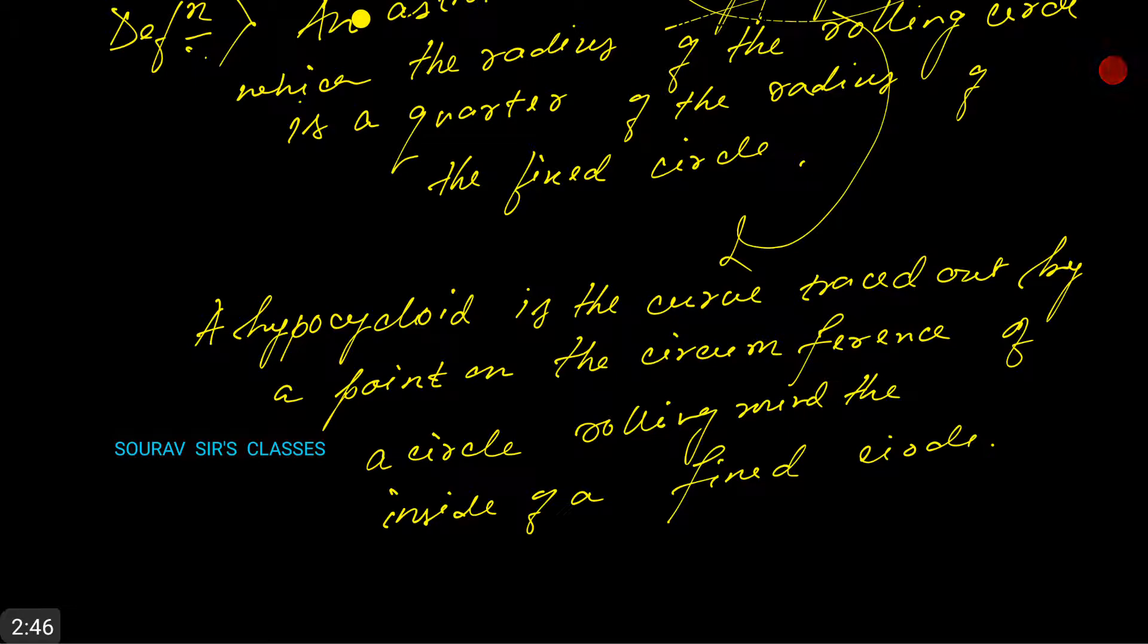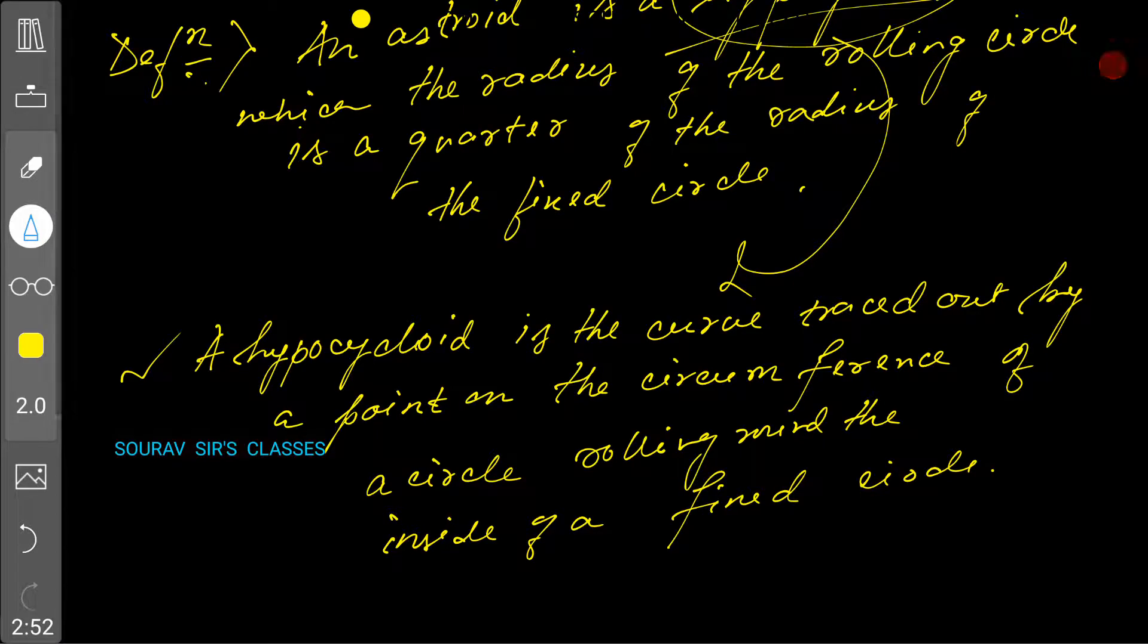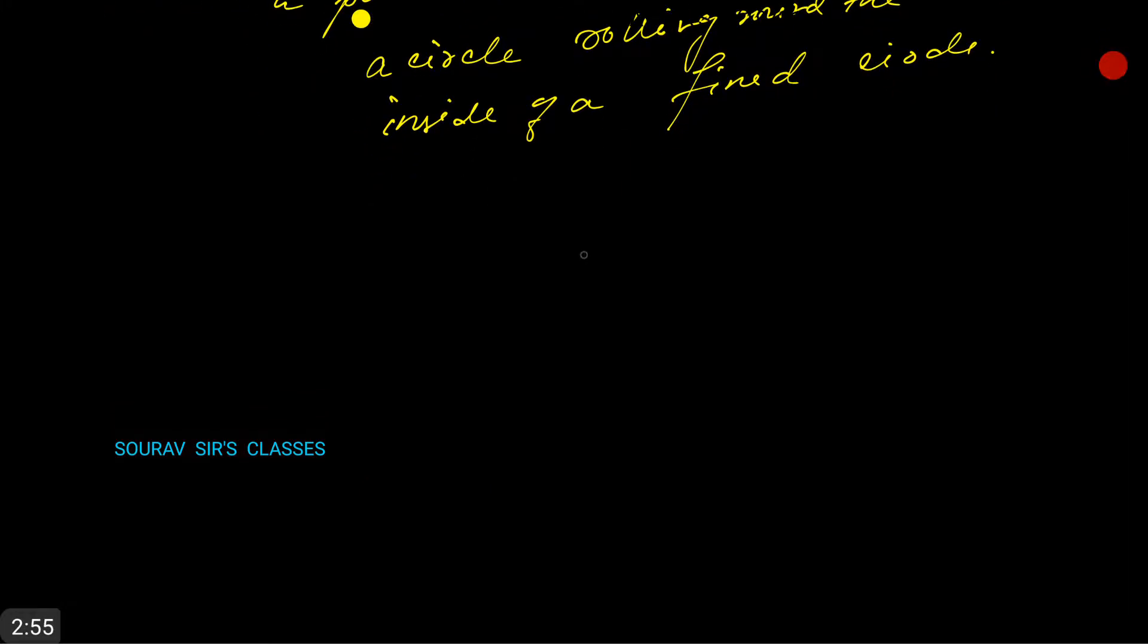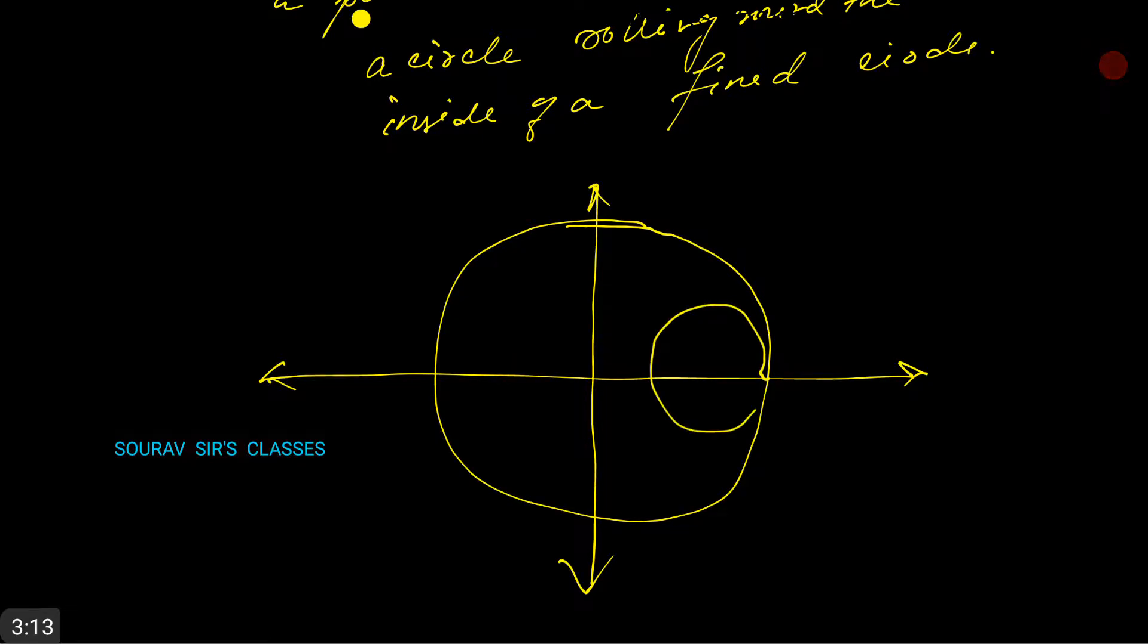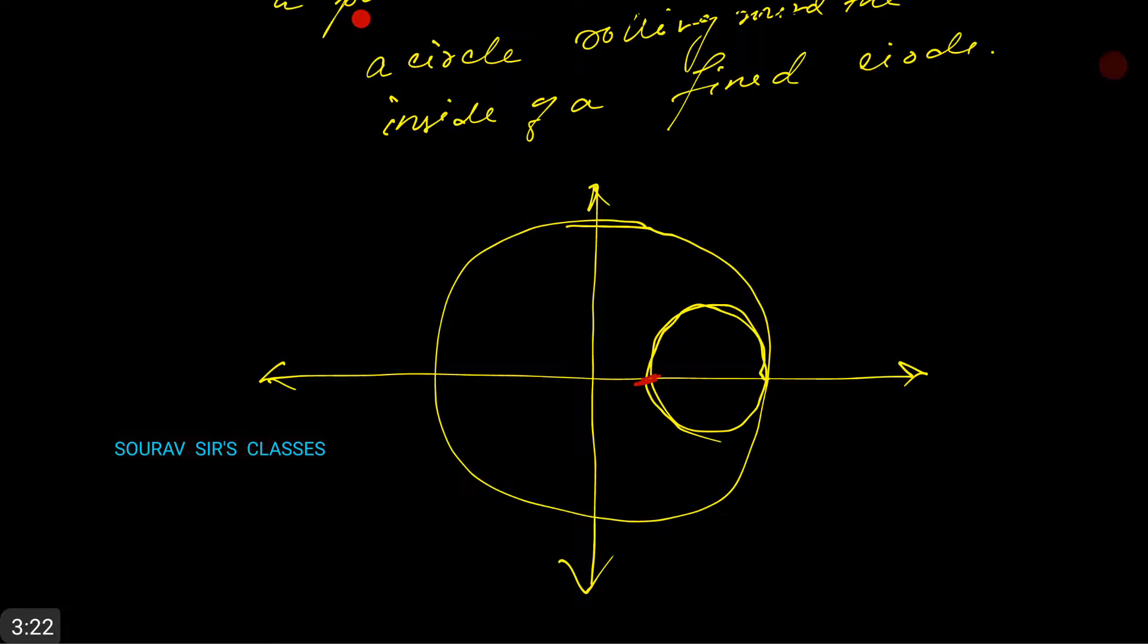So if we just construct a rough diagram, it will look something like this. This is a hypocycloid. This is a big circle, roughly, and let this be the little circle, and let this be a point on the little circle. This is the point. So now as this circle rotates...